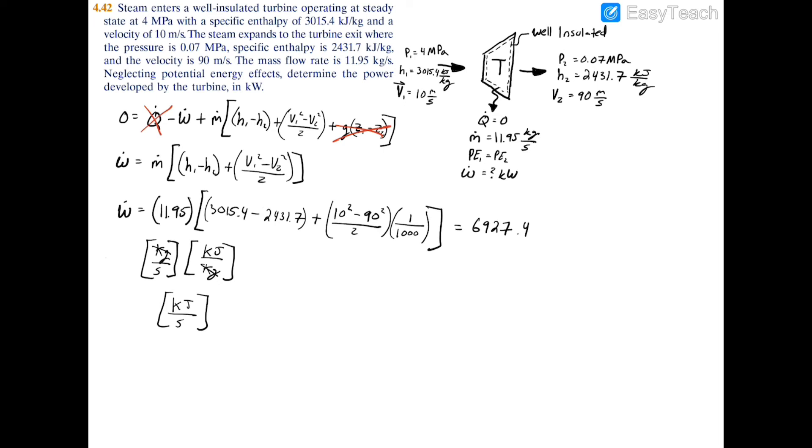Now on the right side, you again have the mass flow rate of kilogram per second times meter squared per second squared. And if you multiply across, you're going to have a kilogram meter squared per second cubed.